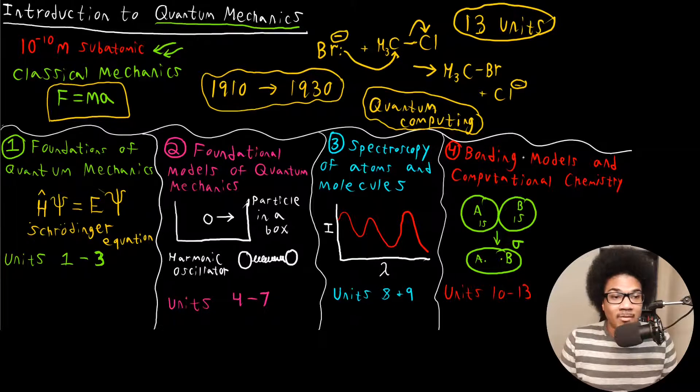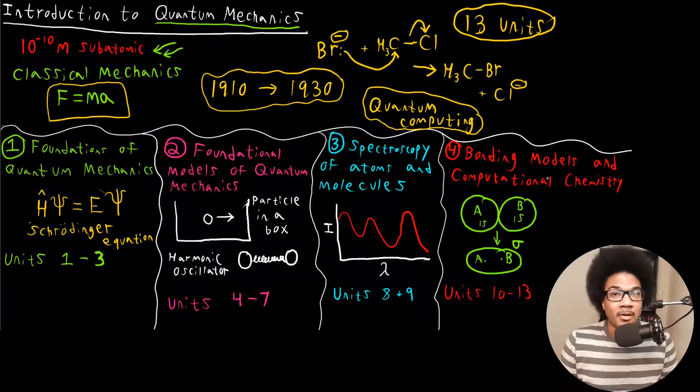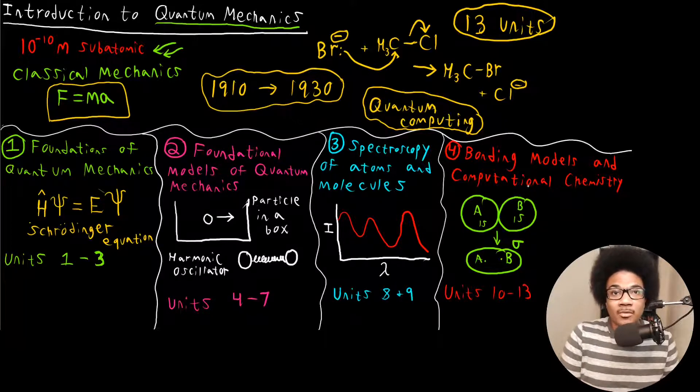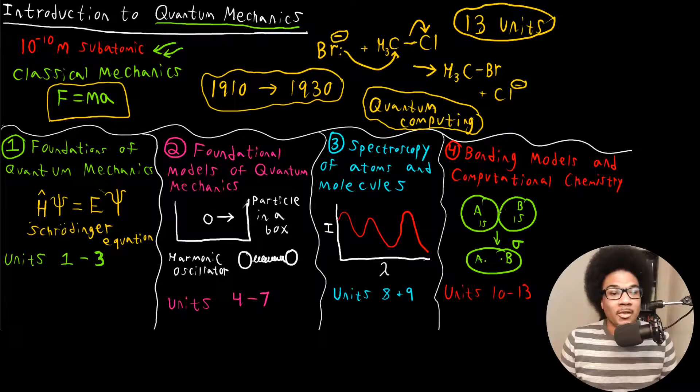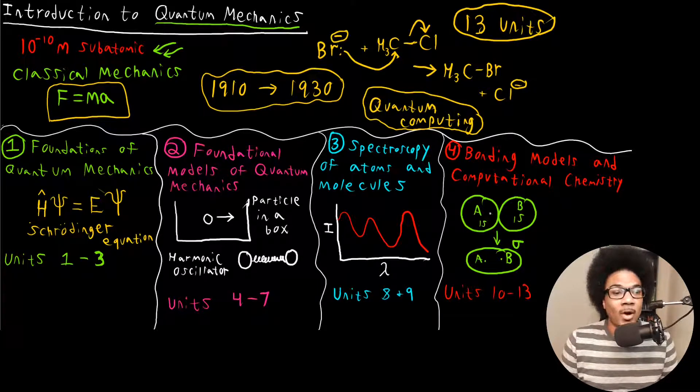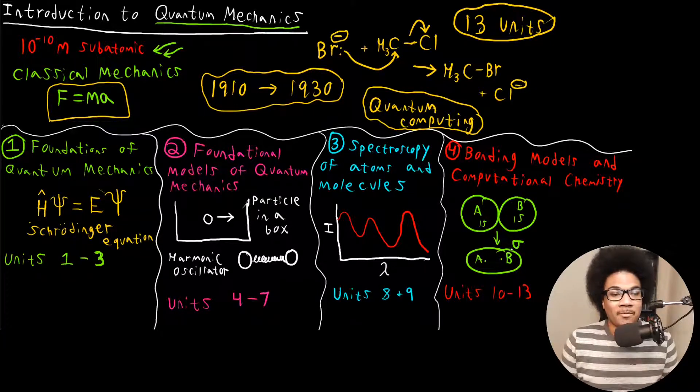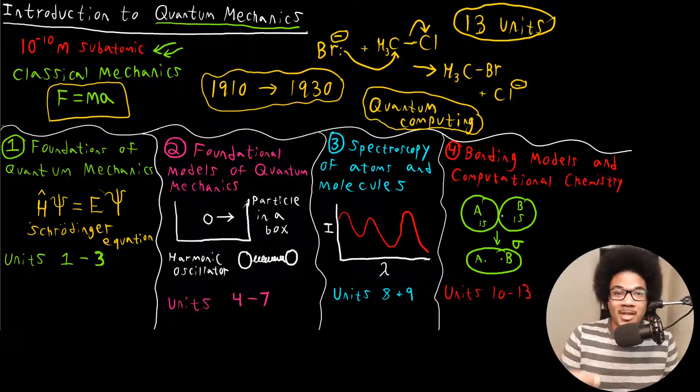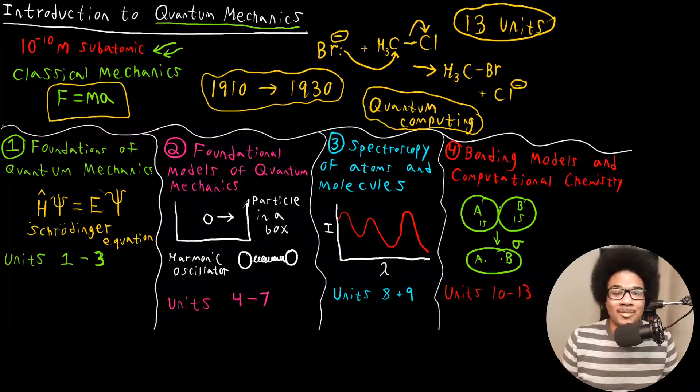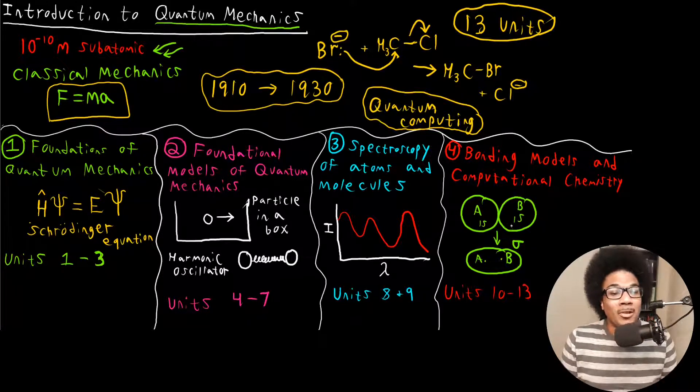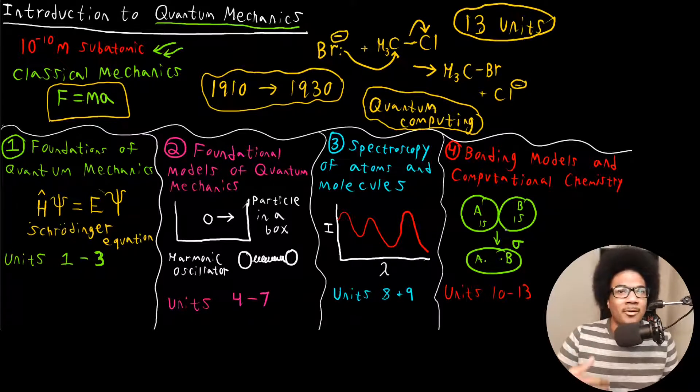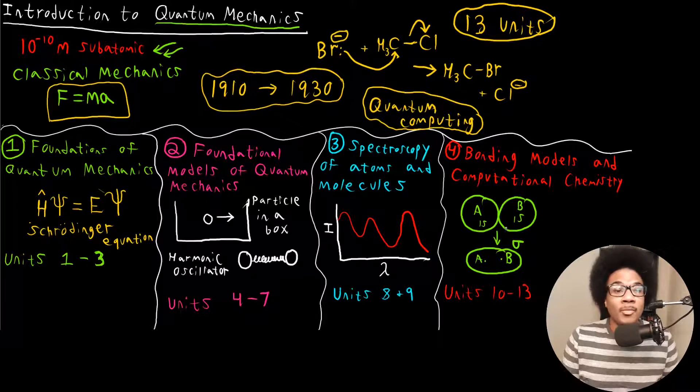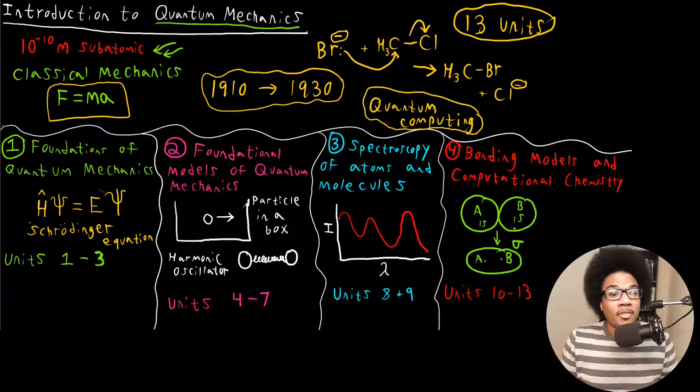And then the last focus of the class is going to focus on bonding models and computational chemistry. Now, one of these bonding models you already learned in general chemistry called molecular orbital theory, where you would have the overlap of two 1s orbitals that come together and form a sigma orbital. All of that stuff comes from the foundations of quantum mechanics. It comes from the wave functions of molecular systems. And so we're going to look at the quantum foundations of bonding models like molecular orbital theory. There's another one called valence bond theory as well that we'll also learn about.